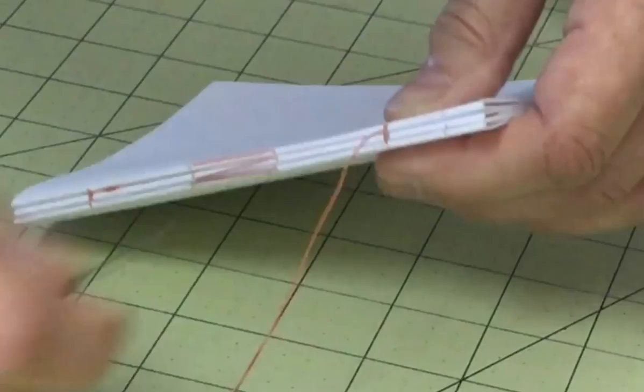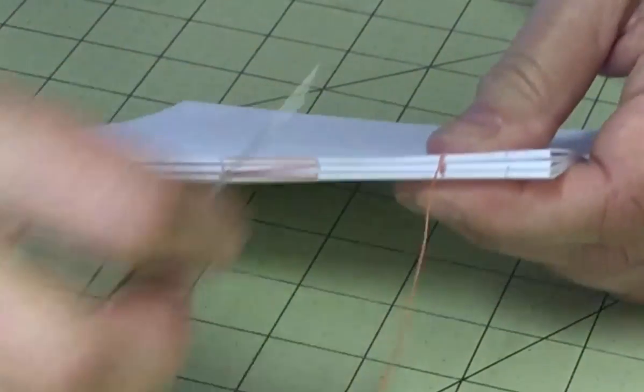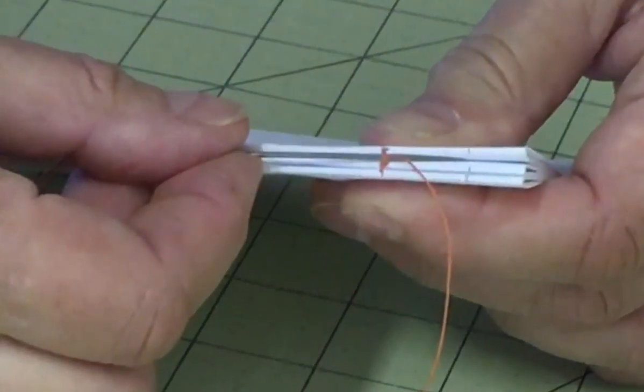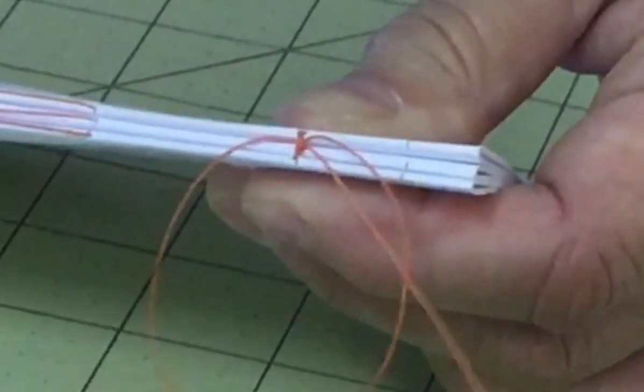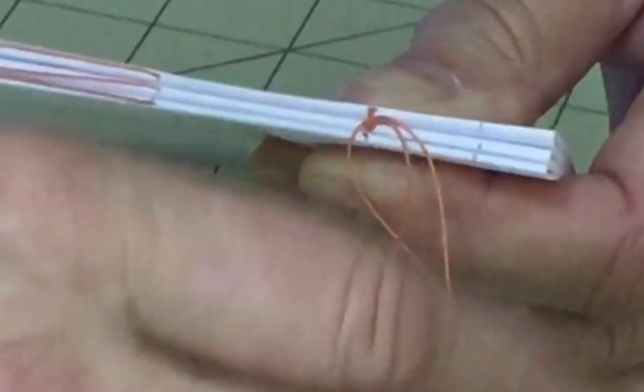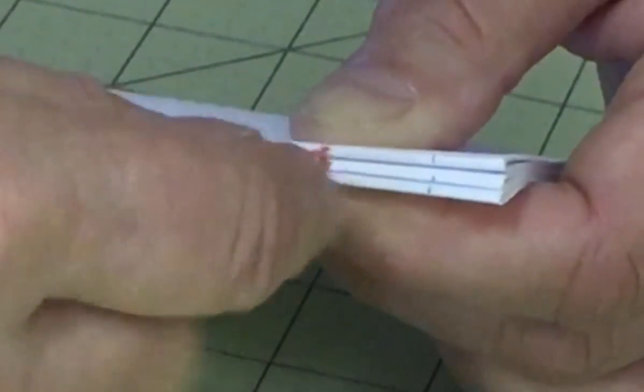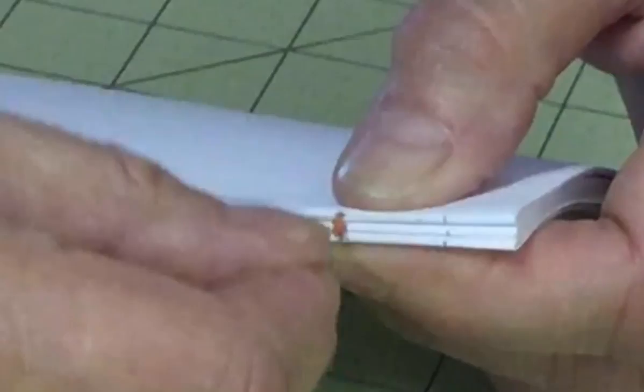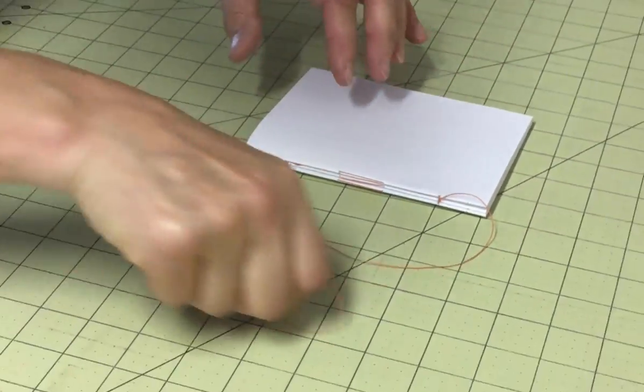When you reach the end of the last signature, make the kettle stitch as usual. Then create a second kettle stitch between the final two signatures. This double kettle stitch finishes off the sewing of the text block.